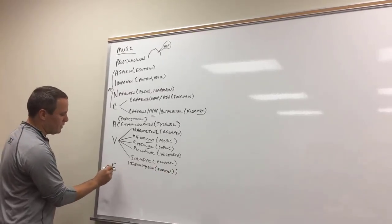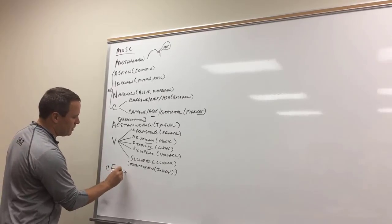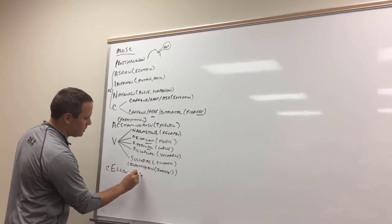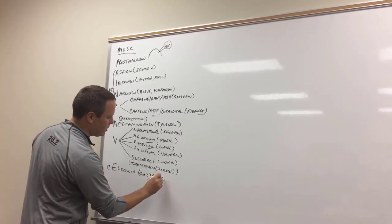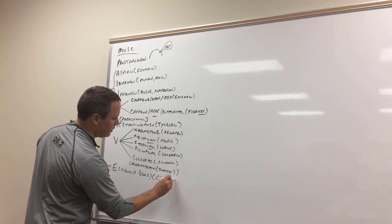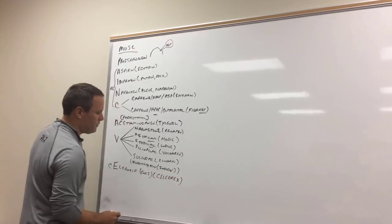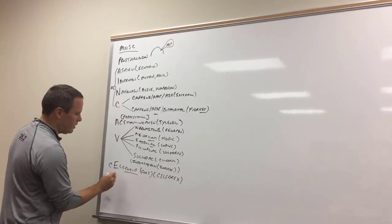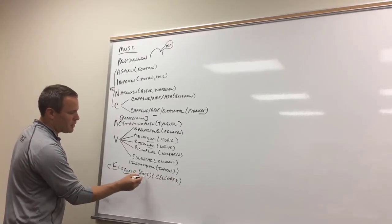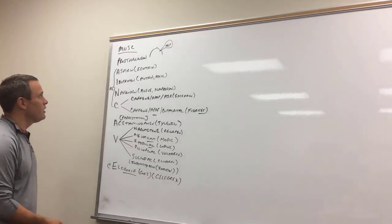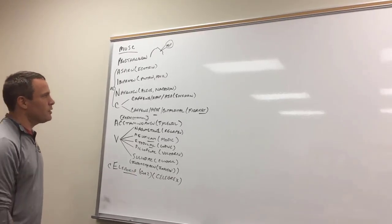And then the E is the second letter, celecoxib, and that's a COX-2 inhibitor, and the brand name is Celebrex, like you are celebrating your relief from arthritis pain. There are two E's in there and two C's, so that's how you remember it's a COX-2 inhibitor.